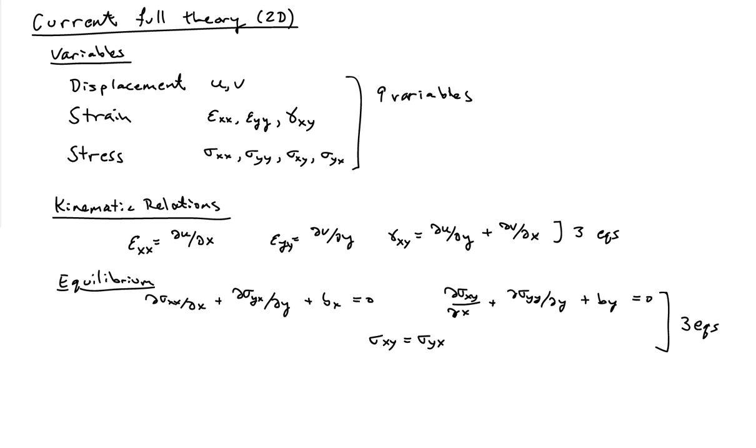Now we also have three equilibrium equations: sum of the forces in the X, sum of the forces in the Y, and sum of the moments about the Z. So we have nine variables, six equations, so there's three missing relationships to our setup here, which we're going to have to fill in to come to a complete theory.